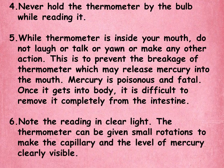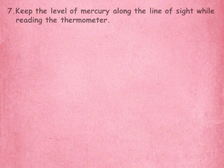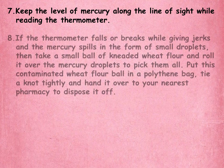Note the reading in clear light. The thermometer can be given small rotations to make the capillary and the level of mercury clearly visible. Keep the level of mercury along the line of sight while reading the thermometer. This will give you the exact measurement of the body temperature.